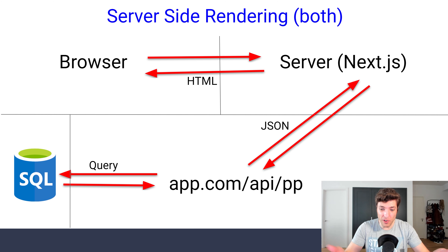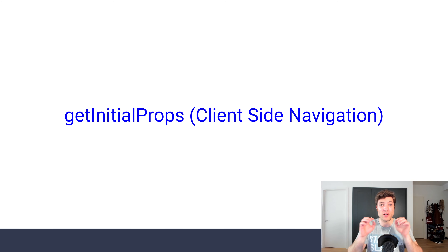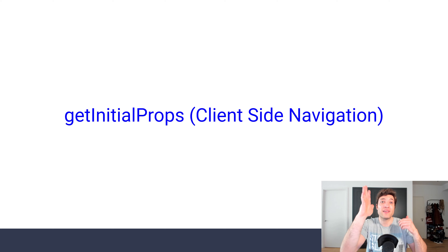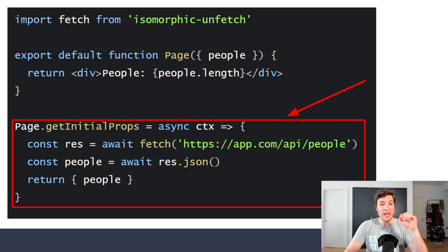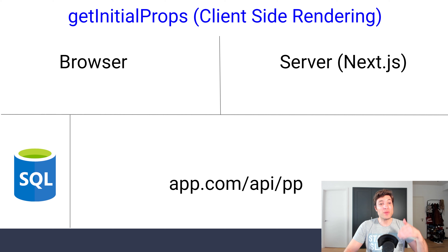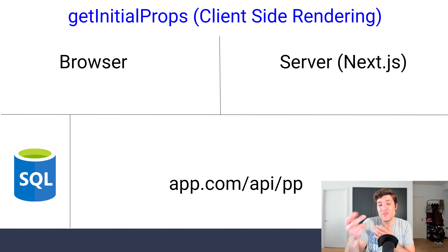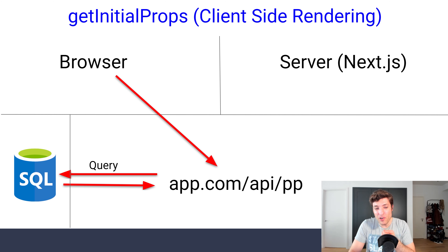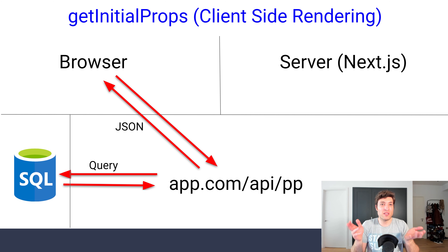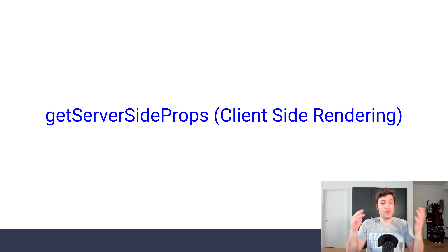Where they differ is on client-side navigation — when your application is already loaded and you click a link and navigate to another page like /people or /car. With GetInitialProps, because it runs on your browser, doing that fetch you go directly to the API/people endpoint. That API does exactly what it was doing before and returns JSON to your browser. That's what we studied in part number 2.